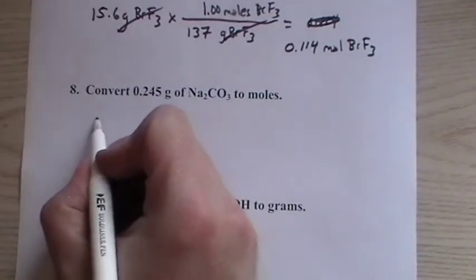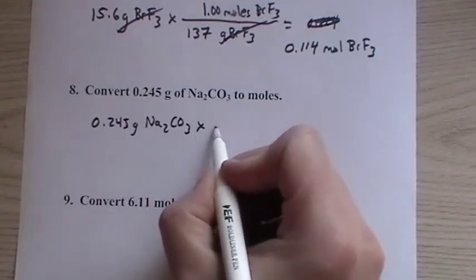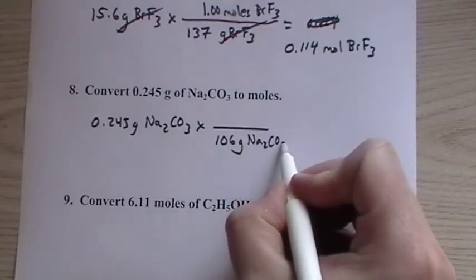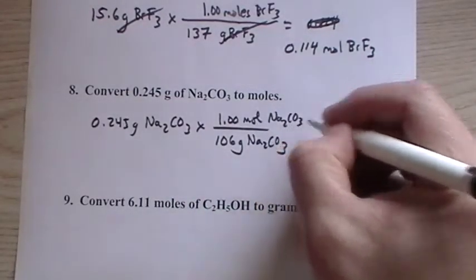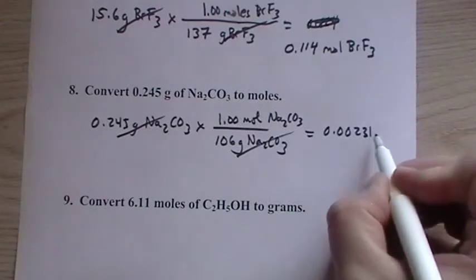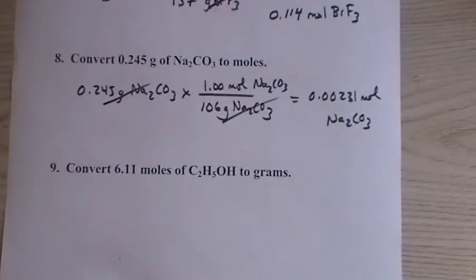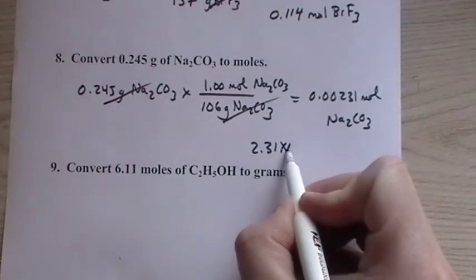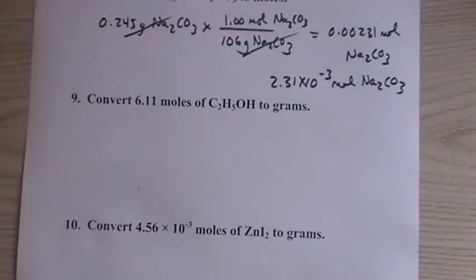Then 1.245 grams of sodium carbonate. We use the molar mass again: 106 grams of sodium carbonate is one mole of sodium carbonate. We end up with 0.00231 moles of sodium carbonate. Putting your answer as moles is partially right - you should always have the moles of what. And we probably want to change this into scientific notation form.